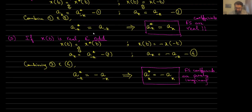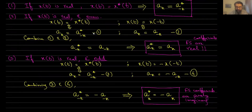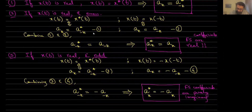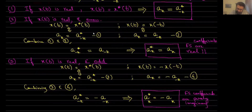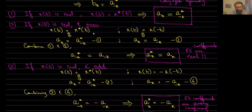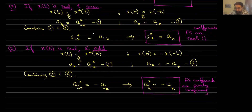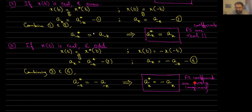All three of these implications follow from just the one conjugation property we derived. In conclusion: if x(t) is real, the Fourier series coefficients satisfy conjugate symmetry. If x(t) is real and even, the Fourier series coefficients are going to be purely real. If x(t) is real and odd, the Fourier series coefficients are going to be purely imaginary.